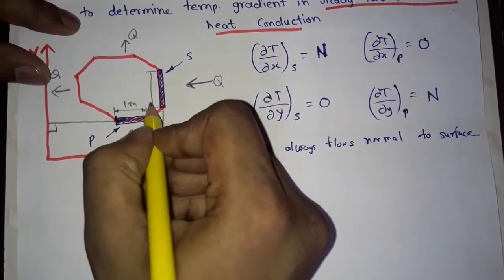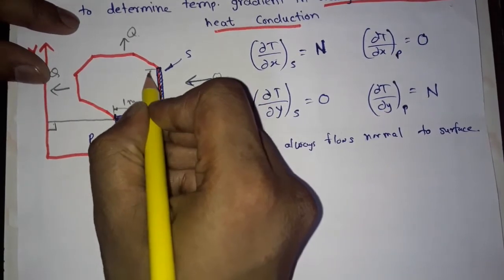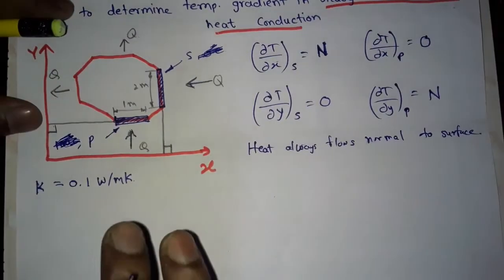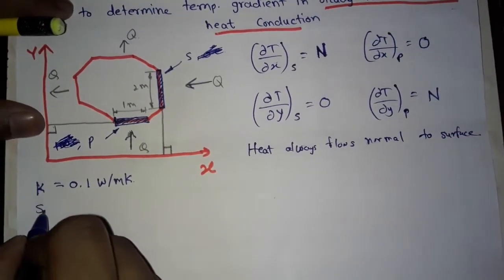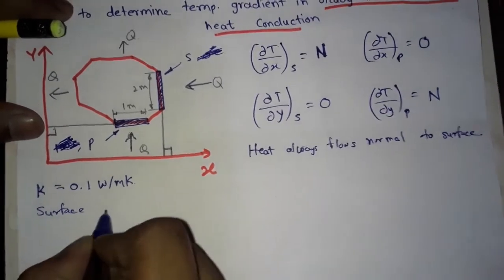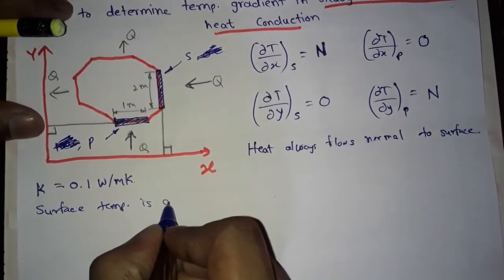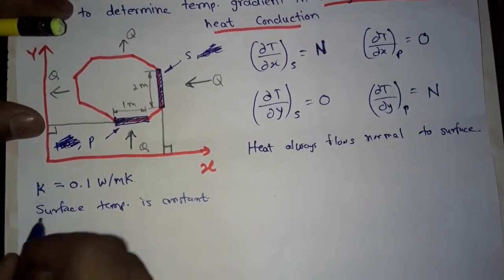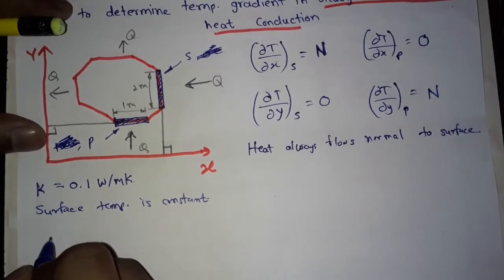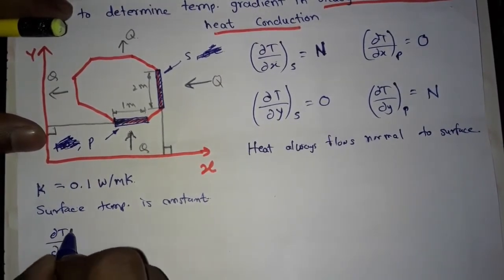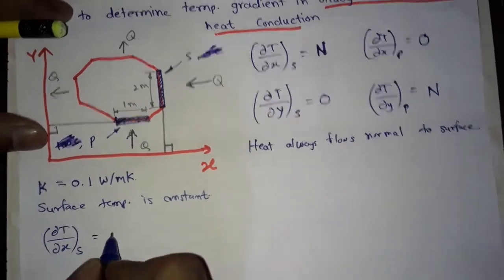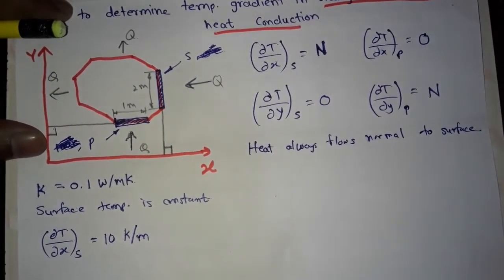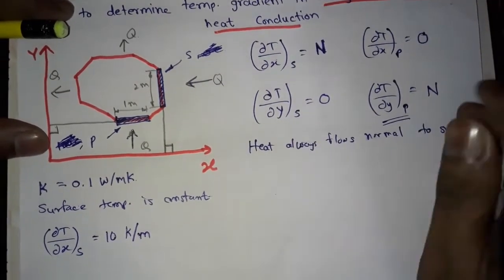Suppose this surface has a length of one meter and this surface has a size of two meters. We are going to consider the surface temperature is constant. The given data is: ∂T/∂x for surface S is equal to 10 kelvin per meter. Now we have to find out ∂T/∂y for surface P.